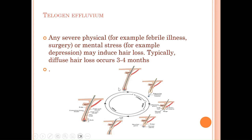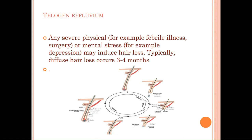Because the telogen phase lasts up to three months, the person won't notice hair loss immediately. If someone had surgery or gave birth, they'll notice the hair falling in chunks about three to four months later. That's because the hair was pushed into the death phase all at once, but it takes three months for it to actually fall. Patients will typically report: 'I had a bereavement three months ago, and now my hair is falling in chunks.'